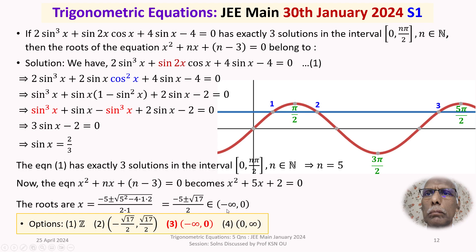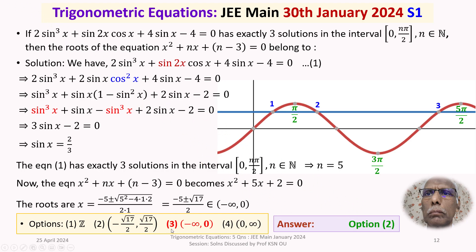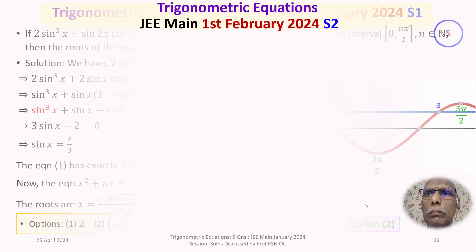Both roots are negative, so they belong to (-∞, 0). Therefore the answer to this question is option 3. There is a typographic error on screen, but the correct answer is option 3.